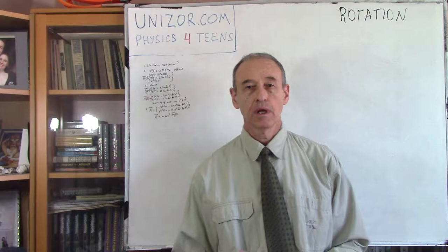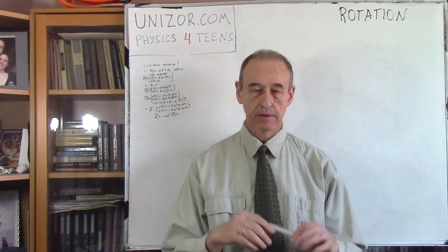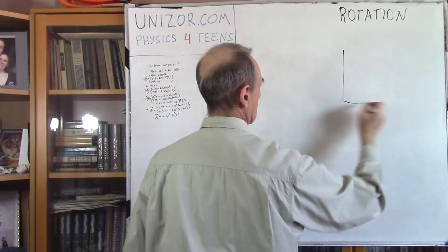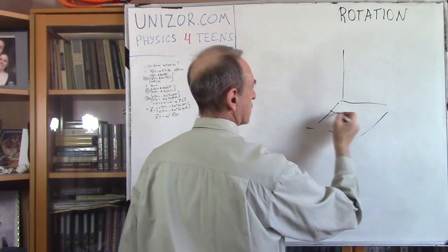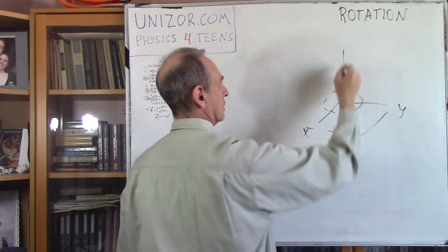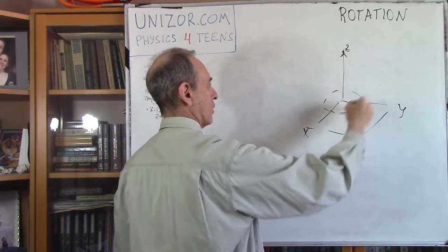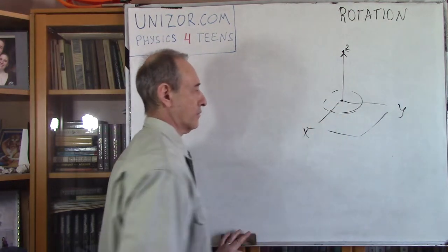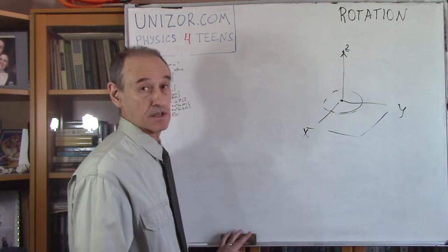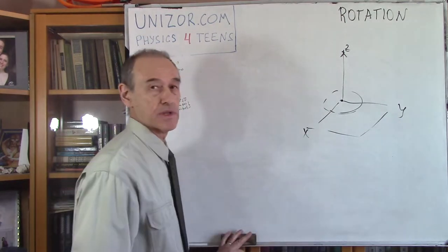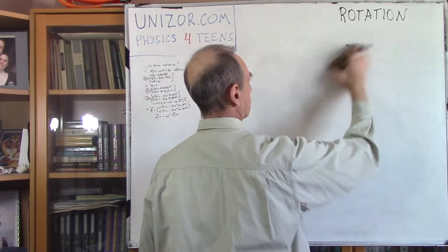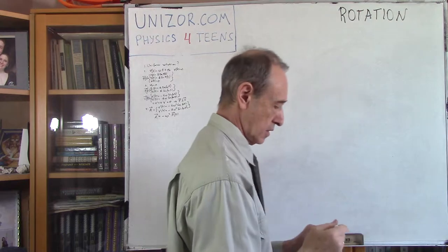Today we will talk about rotation within the xy plane around the z-axis. You have a plane and rotation is within the plane. This is the xy plane, this is z, and it's only around the initial position and around the z-axis. So everything is happening within the xy plane. That's our purpose of this lecture: to analyze this particular motion.